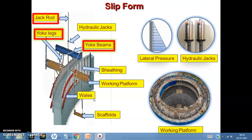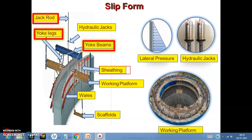In this second part of the lecture we are going to discuss the functions of various slip form components one by one. The first component is called sheathing. The function of the sheathing is to contain and provide shape to the concrete, and it helps to maintain the correct profile of the structure being slip formed. The sheathing, along with the wales — the horizontal member shown in red — resists the lateral pressure of the concrete.